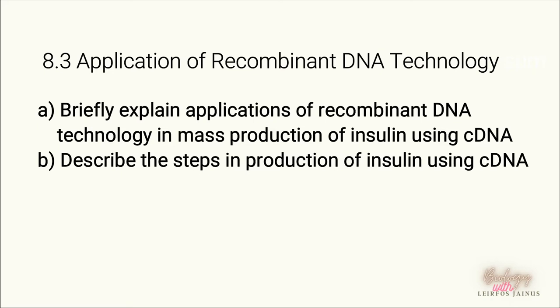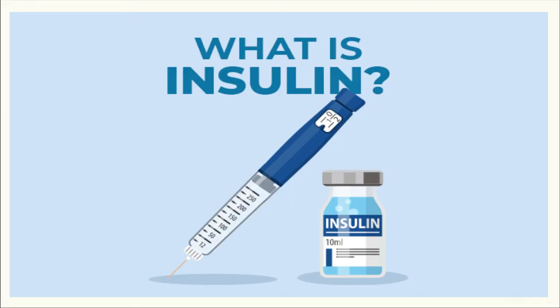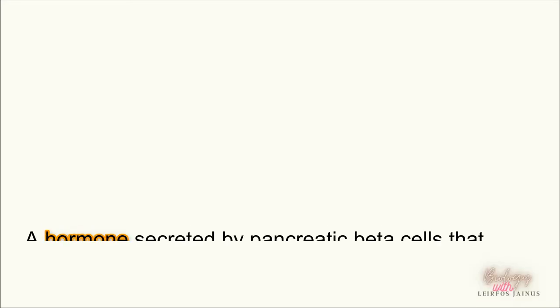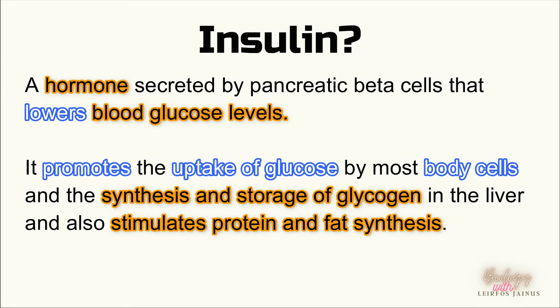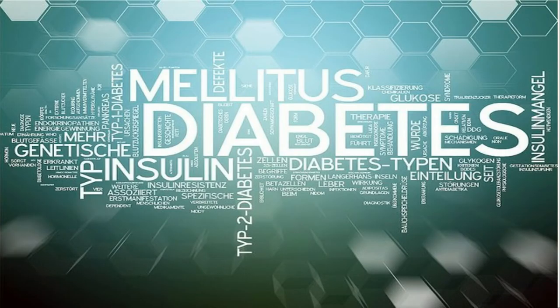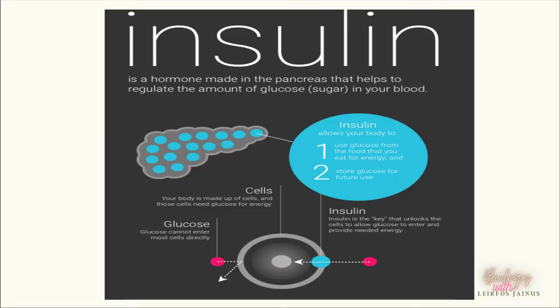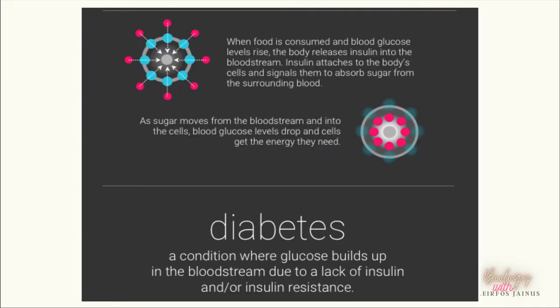Before we discuss more about the application, let's try to understand what insulin is and why we need it. Insulin is a hormone secreted by the pancreatic cells of humans that can lower the blood glucose level by promoting the uptake of glucose by body cells. For example, liver cells can convert excessive glucose into glycogen, while other cells can convert glucose into protein and fat. Insulin allows the cell to use glucose. Diabetes is the condition where glucose levels build up in the bloodstream due to the lack of insulin or due to insulin resistance.